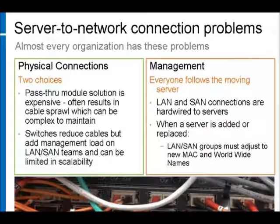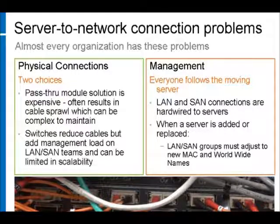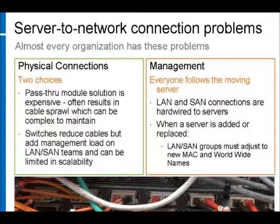To manage the physical MAC and worldwide connections, IT organizations have two basic choices, each with advantages and disadvantages. Pass-through modules are simple in design but can be expensive and complex to maintain, often requiring many hundreds or even thousands of cables in large organizations. Network switches can partially reduce the number of physical cables, but can increase the management load on the LAN and SAN. Both options present management challenges because connections between servers and LANs are essentially hardwired, so every time a server is added or changed, network connections have to be modified, typically requiring coordination across multiple administration groups.